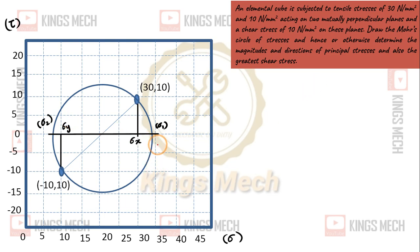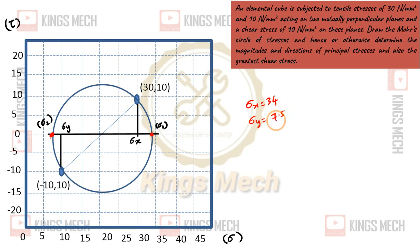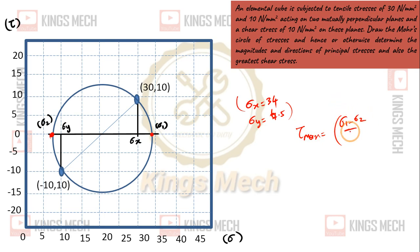If we have the circle, we take the extreme ends on the 0 axis line. This gives 30 and 10, so the center is at 20, which equals the middle point. So sigma x, sigma y are identified. Tau max is very simple: sigma 1 minus sigma 2 divided by 2, that is 30 minus 10 equals 20, divided by 2. So the principal stress values are determined.